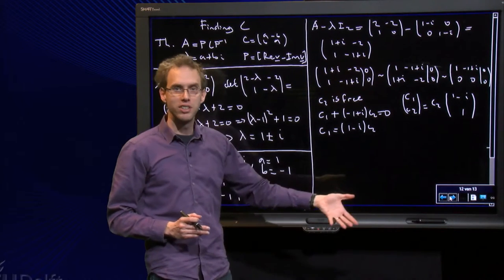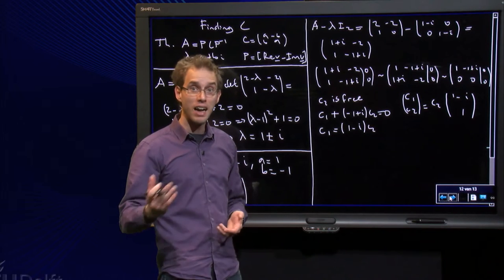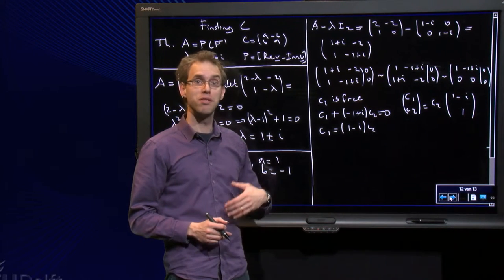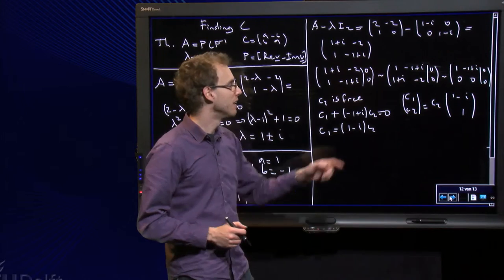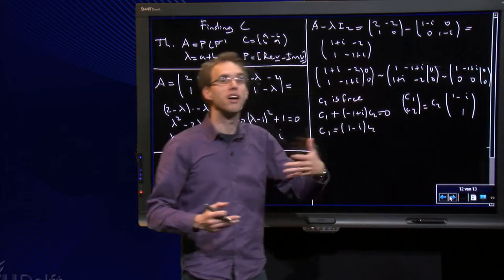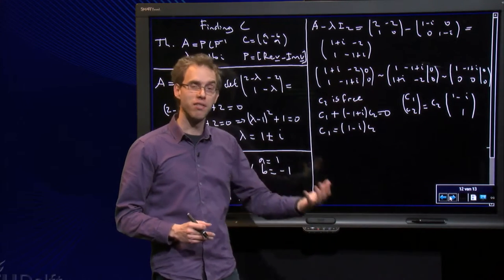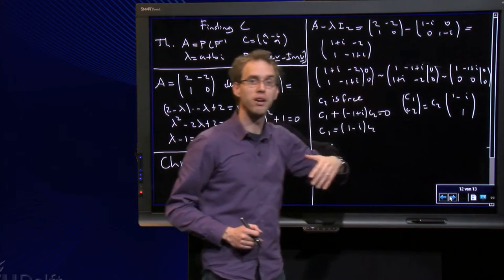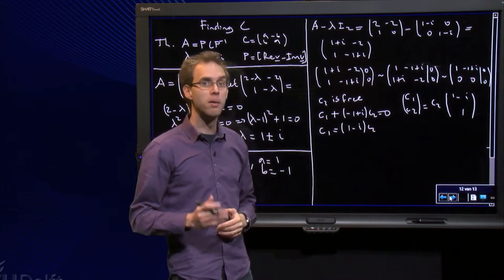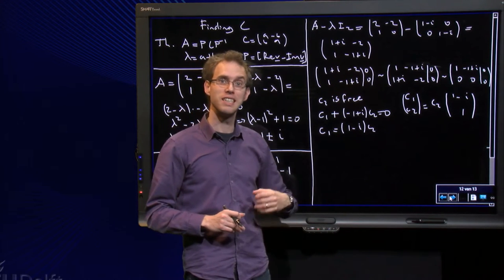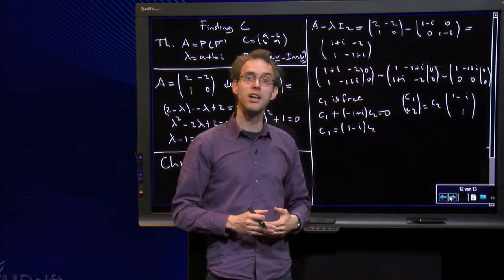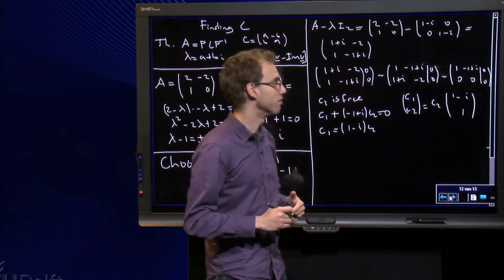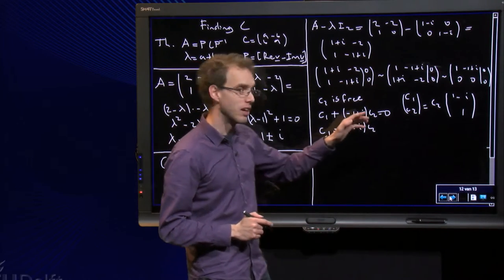But wait a minute, of course it does! I am finding an eigenvector, which means that I need to have free variables in the end. If this wouldn't be a zero, I wouldn't have free variables, so I wouldn't have an eigenvector. So I could have known in advance that I should have gotten two zeros over there, but it is always good to check, because this is a check whether you computed your eigenvalues correctly in the first place.